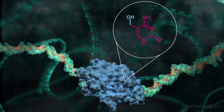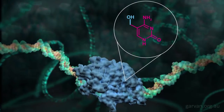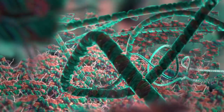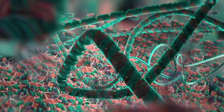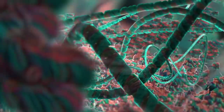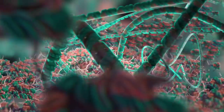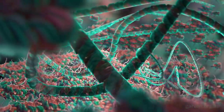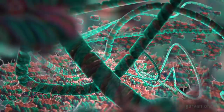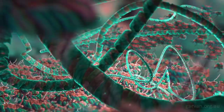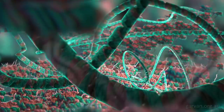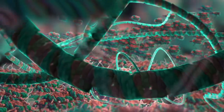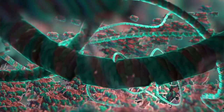In cancer, the pattern of methylation changes. The DNA becomes highly disorganised as methyl groups are added and removed from the DNA. This causes some genes that should be off to be switched on, and some genes that should be on to be switched off.